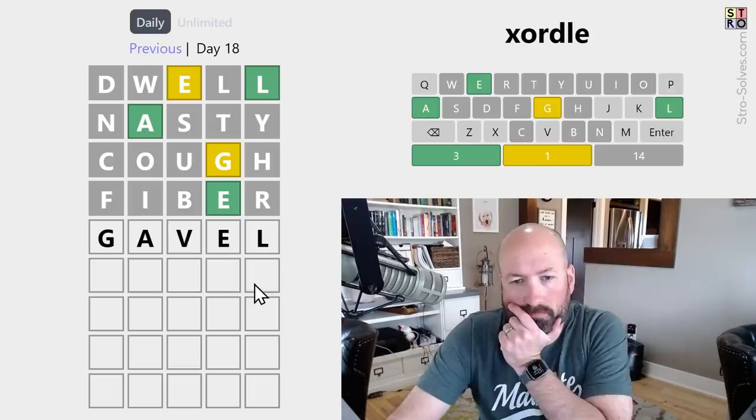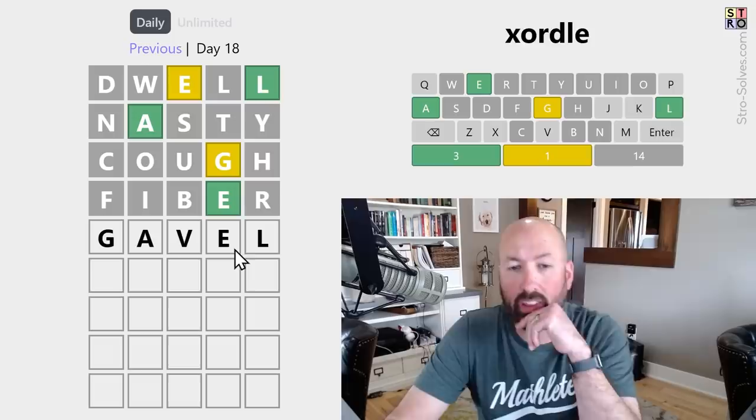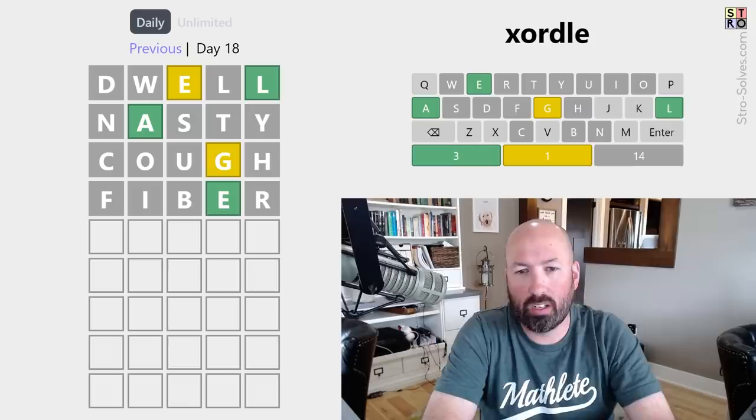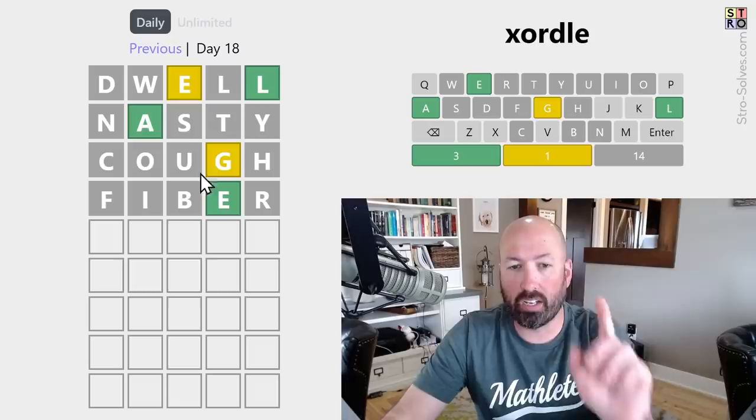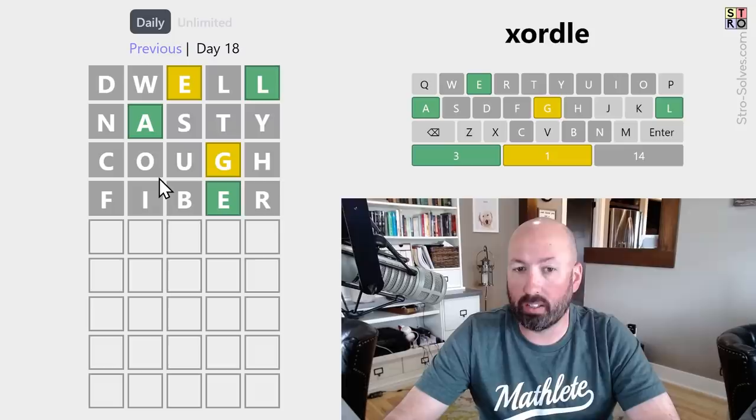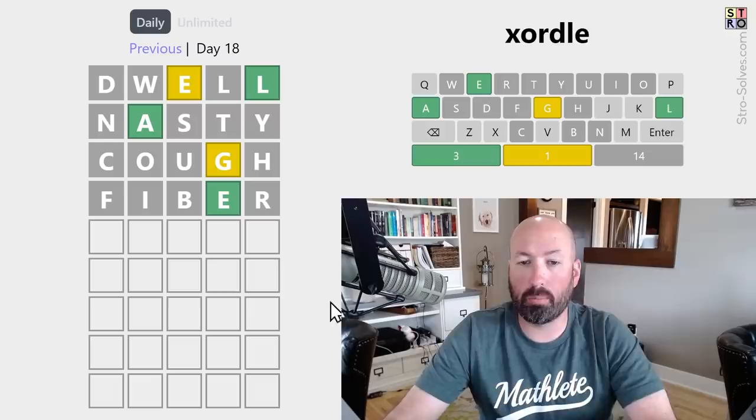The problem is, again, we know the A, E, and L are there. So, that doesn't really help us. Now, we only have A and E for vowels. The fact that we only have A and E for vowels tells me they are in different words. The A and the E are in different words. Because if the A and the E are in the same word, and you can't reuse a letter in the other word, what vowel is going to be in the other word? There's no I, O, U, or Y.